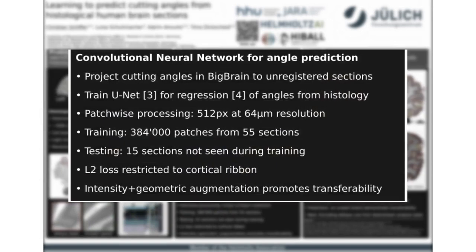We then project these angles back onto the original unregistered histological sections and train a UNET model to regress the angles based on histological image data. For training we sampled almost 400,000 image patches from 55 sections of the BigBrain, and performance was evaluated on 15 additional sections not seen during training. To promote transferability to new brains we apply intensity transformations and geometric transformations.